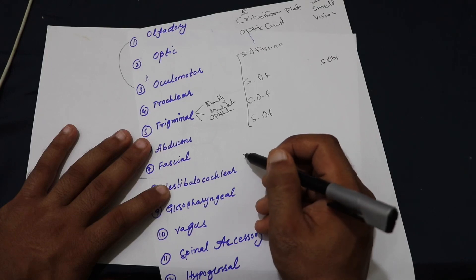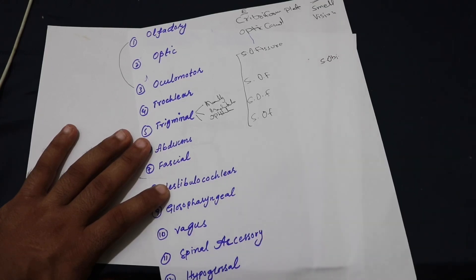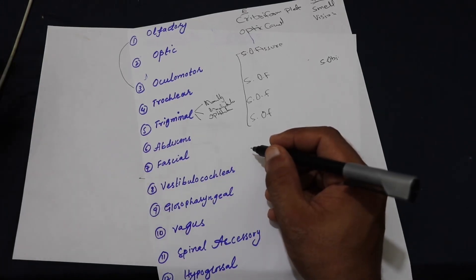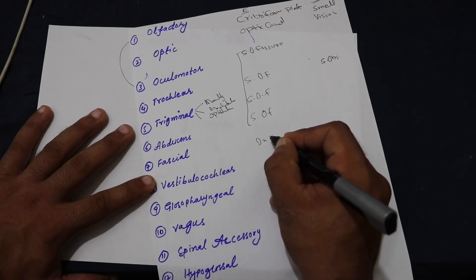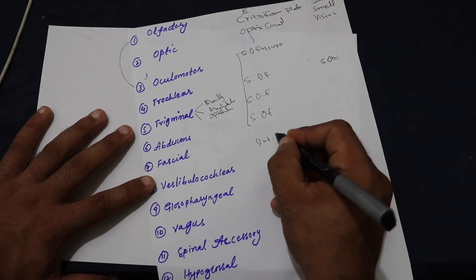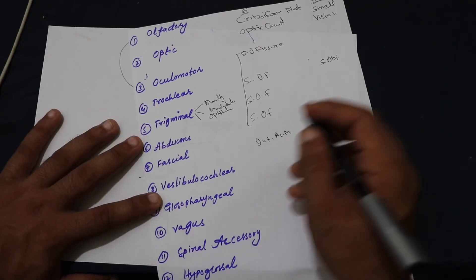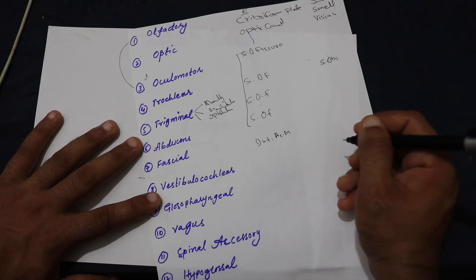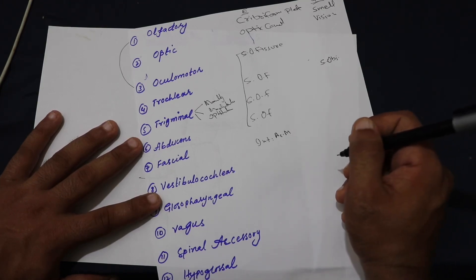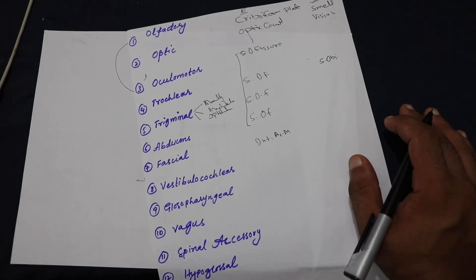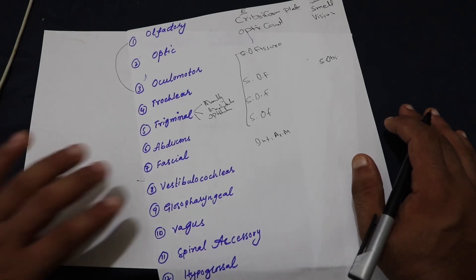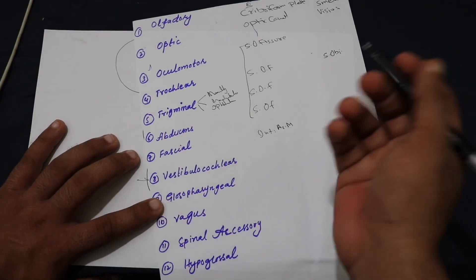Number six is the abducens nerve, which supplies the lateral rectus muscle — it is also a motor nerve. Number seven is the facial nerve, which exits from the internal acoustic meatus. It has vast functions: it carries sensations from part of the external ear, taste from the anterior two-thirds of the tongue and hard and soft palate, and it supplies the muscles of facial expression.